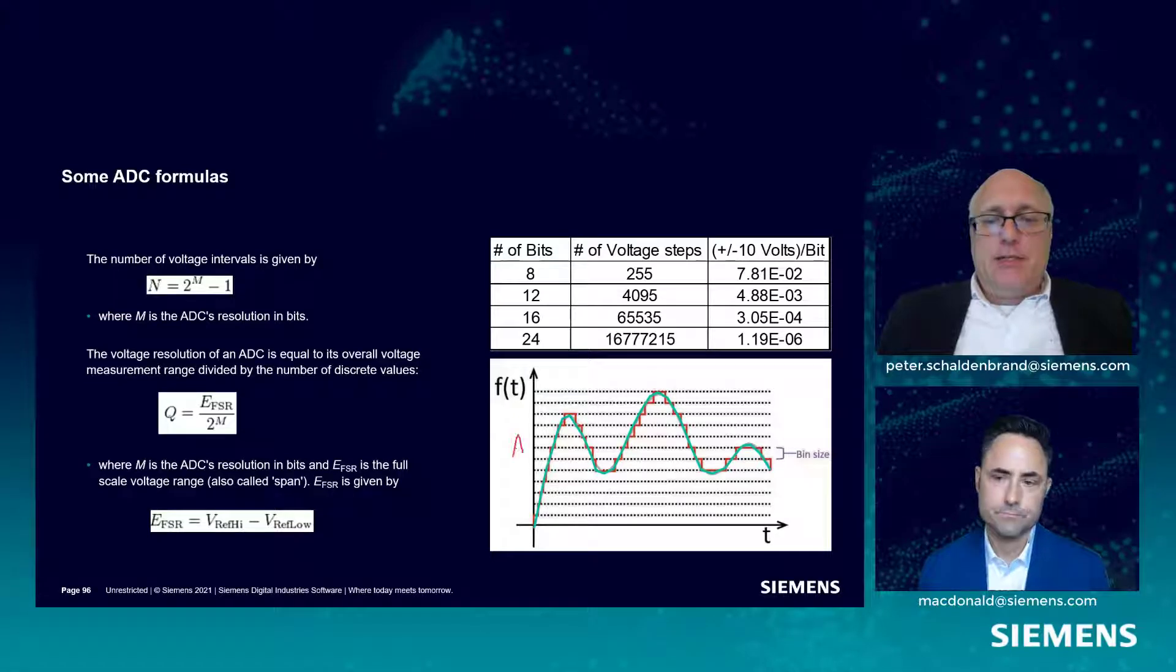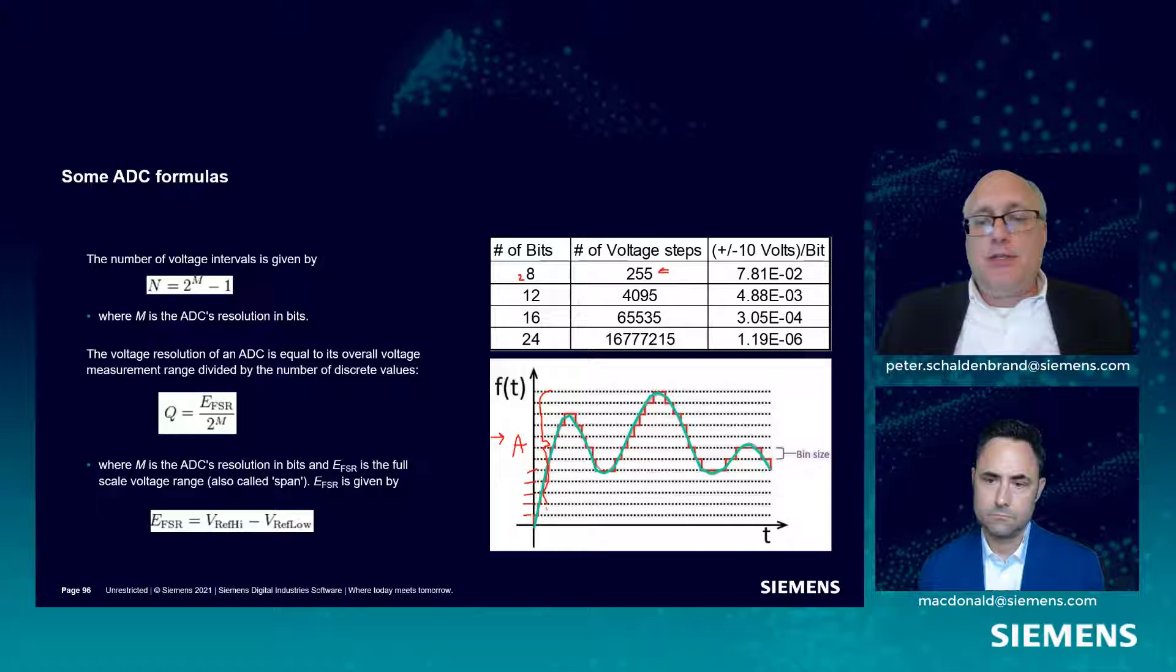Same thing on the y-axis, the amplitude on the y-axis. We can break that up into discrete samples. Some analyzers use 2 to the 8th number of bits. That means they can break this up into 255 steps along this axis.